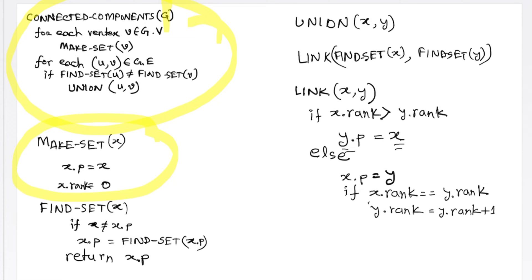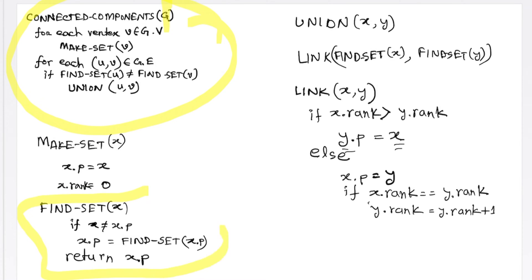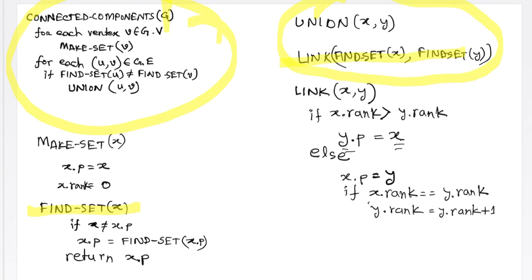This function is responsible for creating the initial rooted tree that has a rank of 0. This function is responsible for returning the root of the tree or the representative of the set. Recall that this find set function is responsible for path compression and returns the representative of the set, which is the root of the tree. Here is the union function, which uses the link function and combines two rooted trees as discussed in the previous lecture on disjoint set forests.